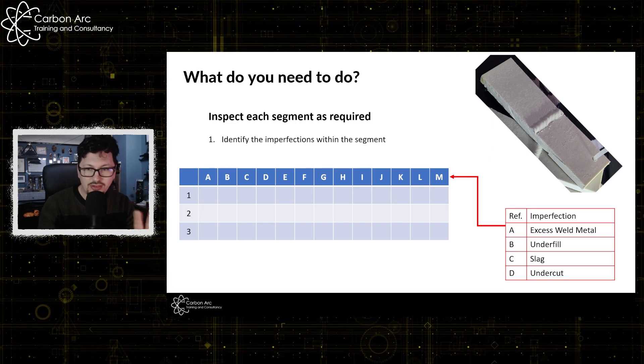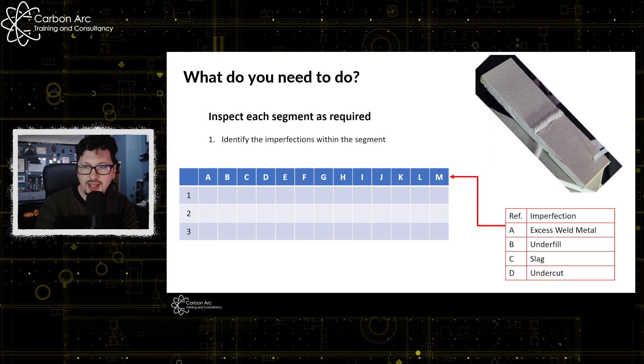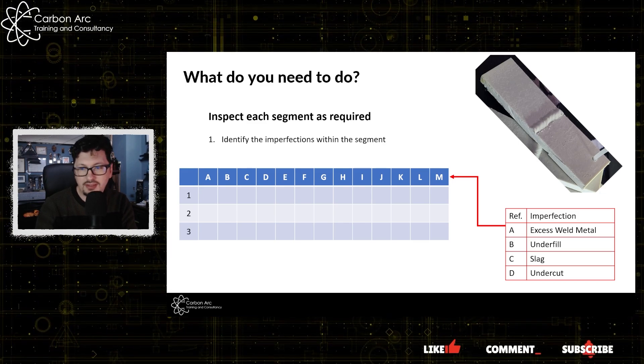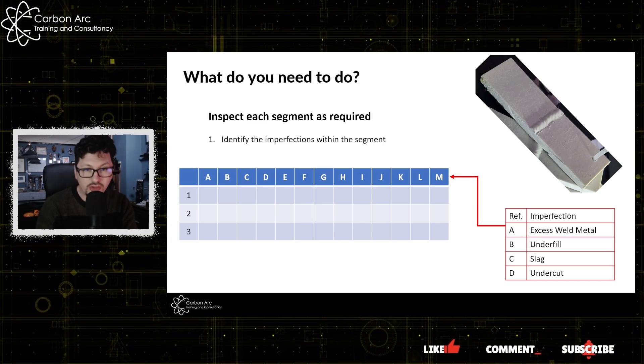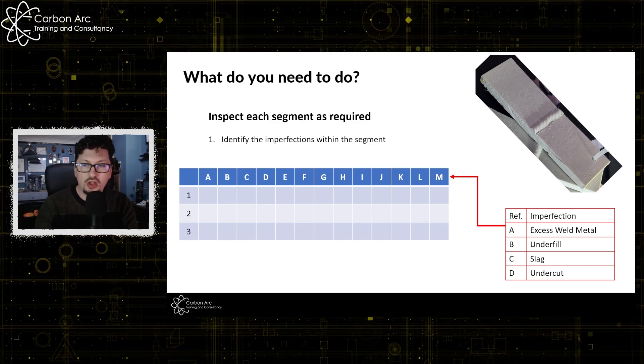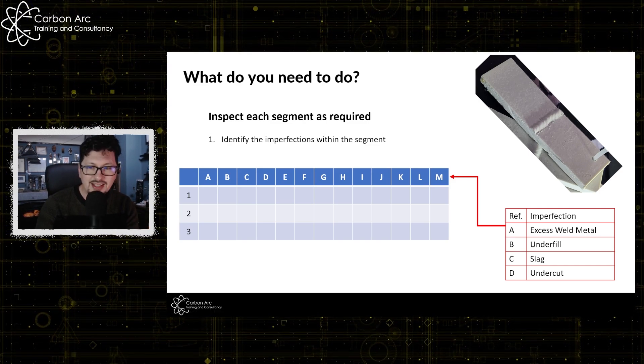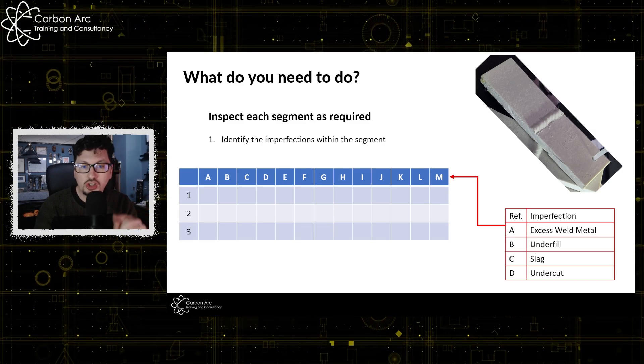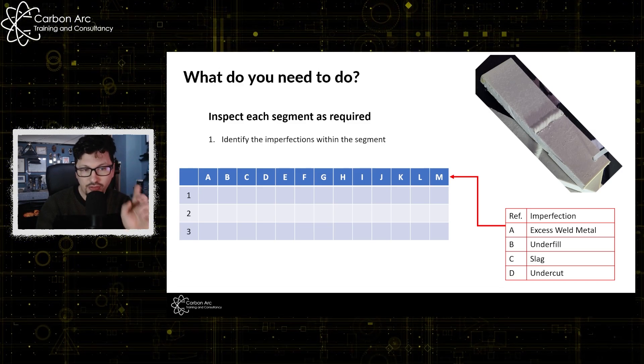So here's just a cut-down version of that list. So A is excess weld metal, B underfill, C slag, D undercut. And they will continue on along there. So what we're doing here is just deciding out of all this list of defects, which ones do you believe you have on your sample?